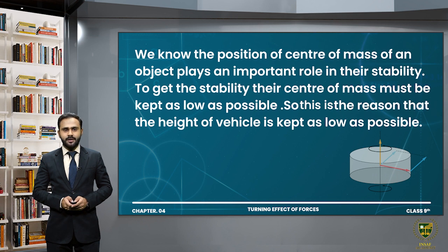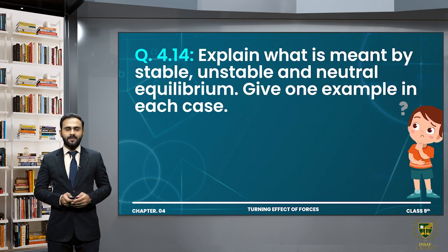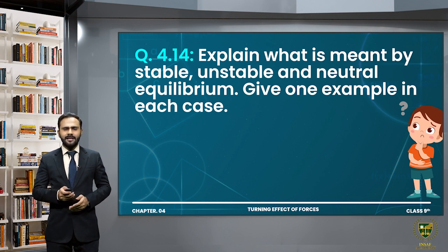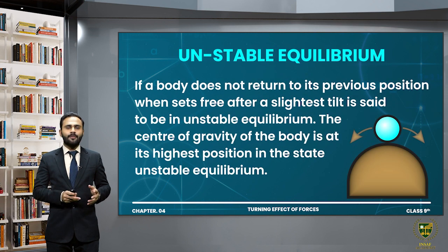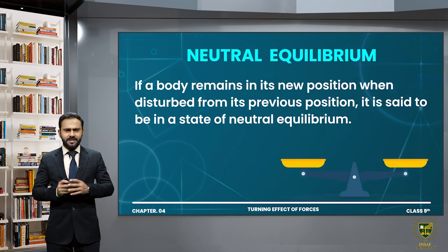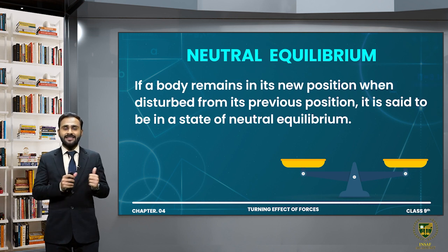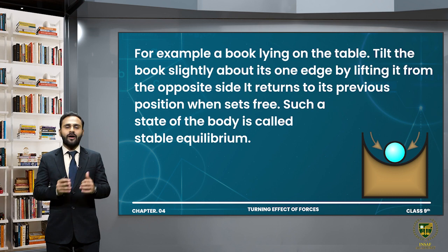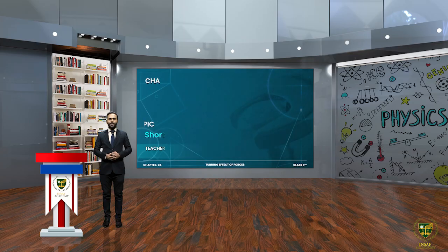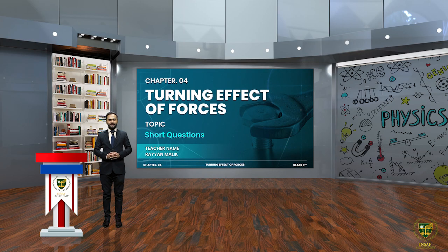Question 4.14: Explain what is meant by stable, unstable, and neutral equilibrium — give one example in each case. Stable, unstable, and neutral equilibrium were thoroughly discussed in the lecture, so you can get the definitions and examples from there.